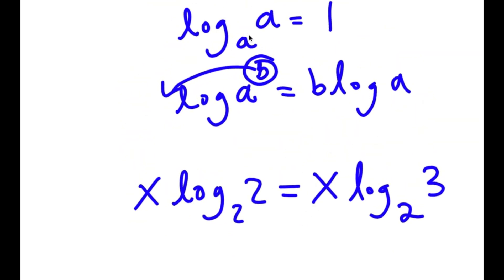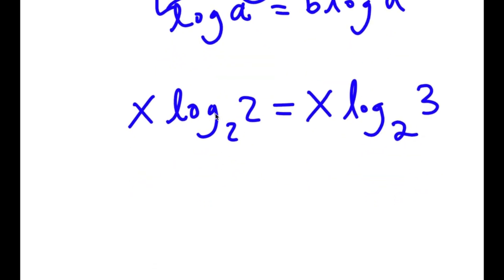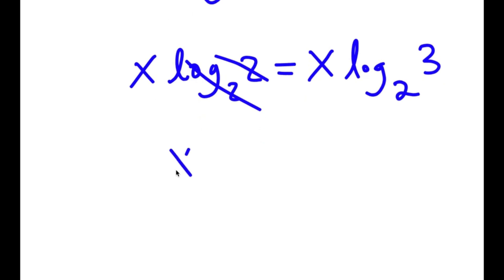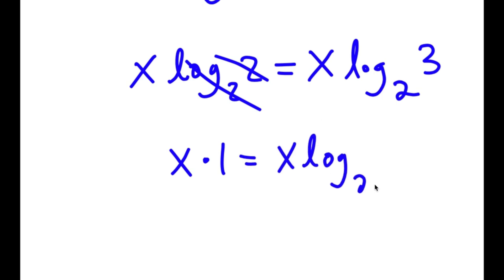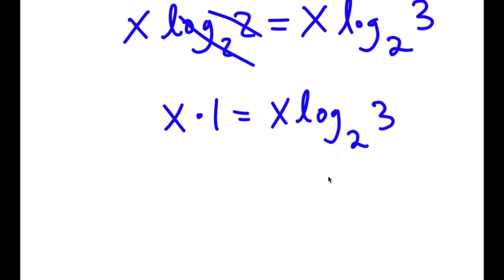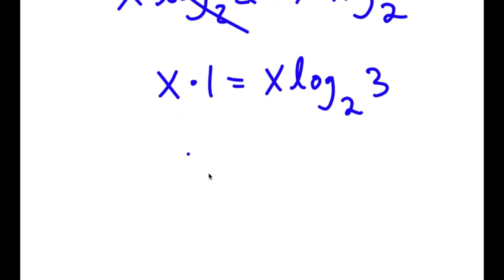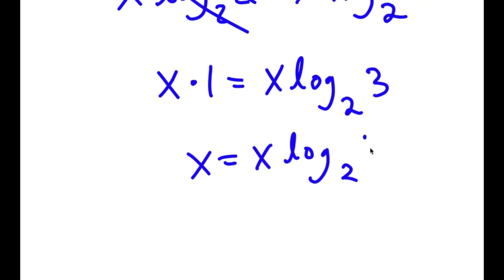Now remember, if I have something in the form log base a of a, this is equal to 1. So log base 2 of 2 cancels out, and I'm simply left with x times 1 is equal to x times log base 2 of 3. And x times 1 is simply x, so I get x is equal to x times log base 2 of 3.